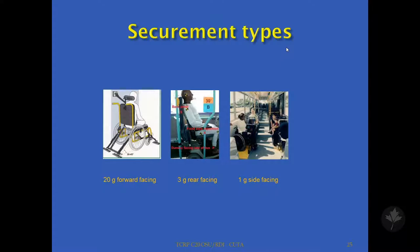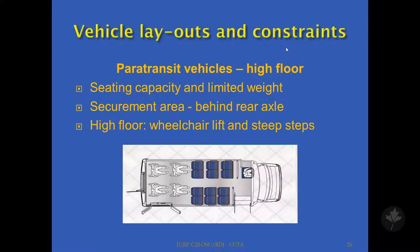Another area we're exploring for the future is side-facing. The picture in front of you is from a vehicle in Spain or Australia — a very large transit vehicle that uses side-facing. You'll notice the user is using a manual chair; it's not a particularly long chair so it doesn't invade the aisle, whereas a long scooter would actually block the aisle, and it may not be a feasible solution. This brings us to looking at various vehicle layouts and their constraints. This is a generic high-floor paratransit vehicle with fairly limited seating capacity, limited weight, and steps to enter the vehicle.